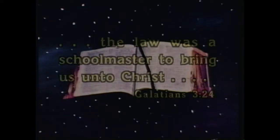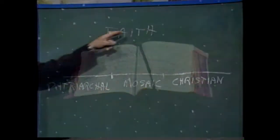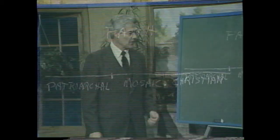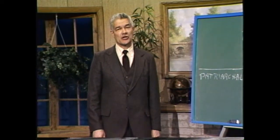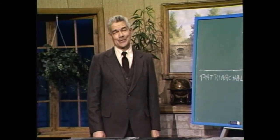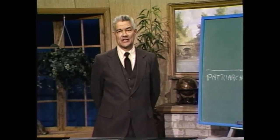In Galatians chapter 3 and verse 24, the scriptures teach that the law was a schoolmaster to bring us unto Christ that we might understand and be justified by this transcendent principle of faith. So the principle of faith transcends legal considerations. For example, Abel was the younger brother of Cain. The older brother had certain legal rights, but that didn't matter when it was compared with faith. So by faith, Abel offered unto God a more excellent sacrifice than Cain.